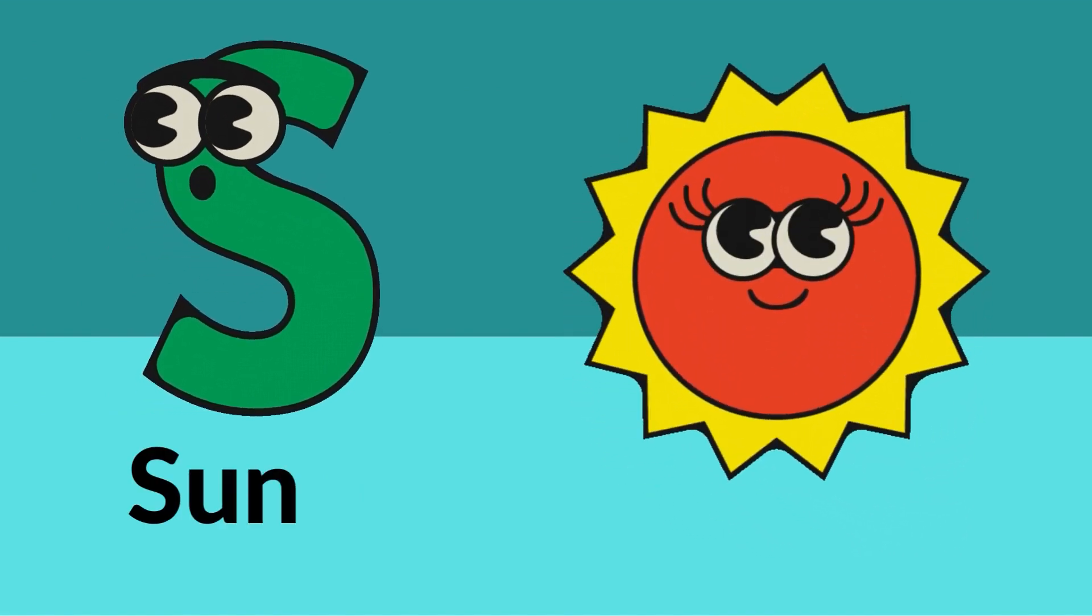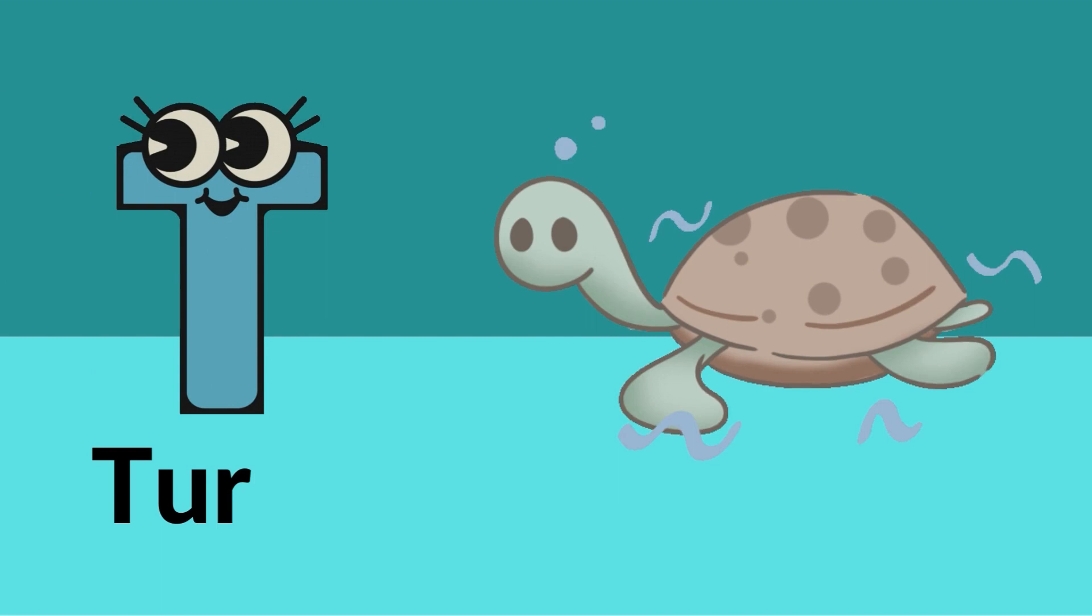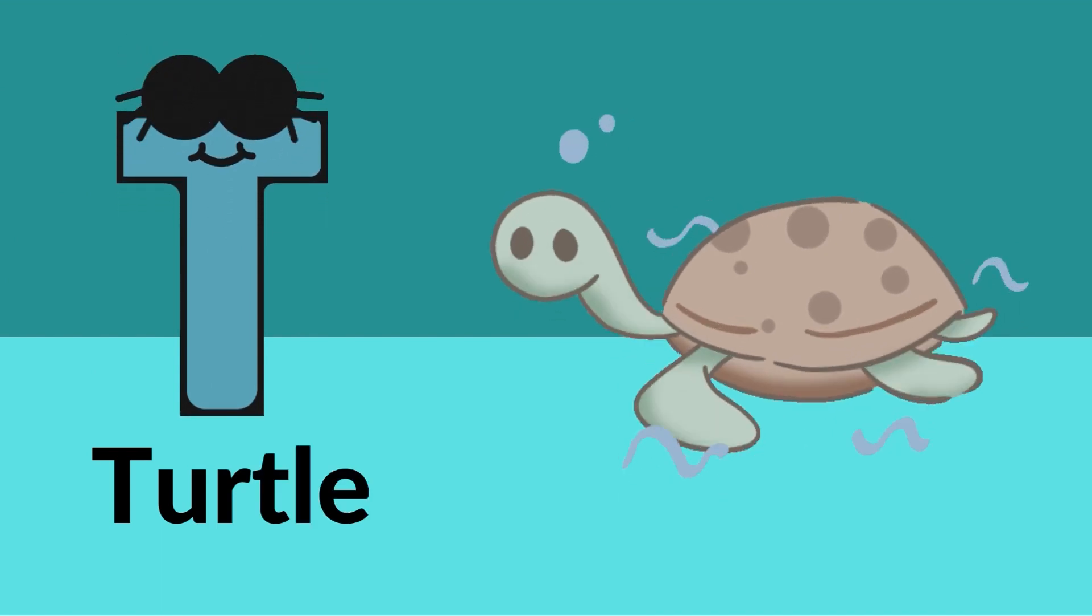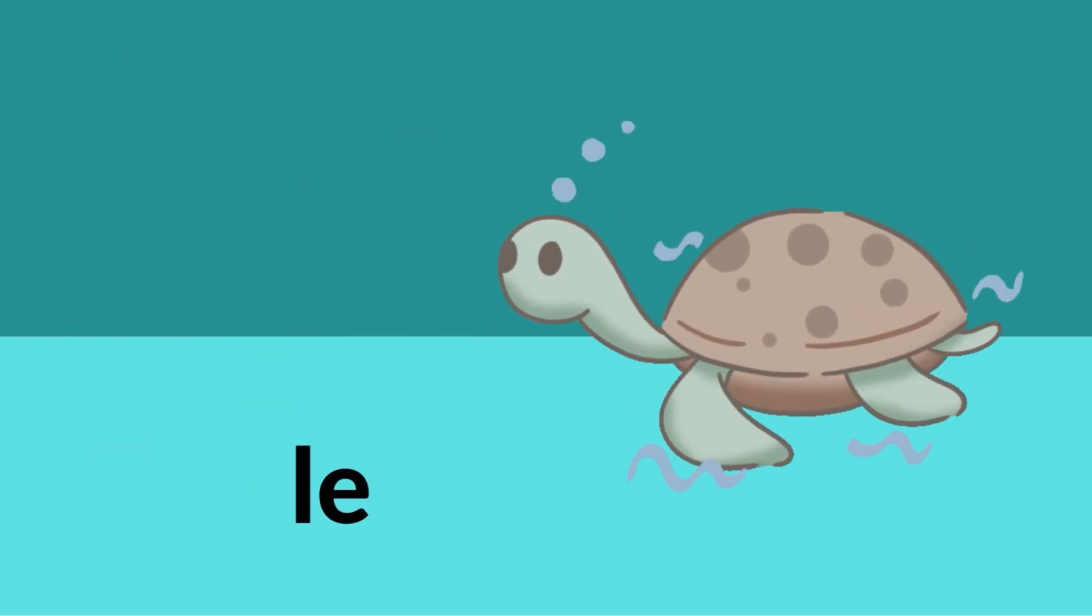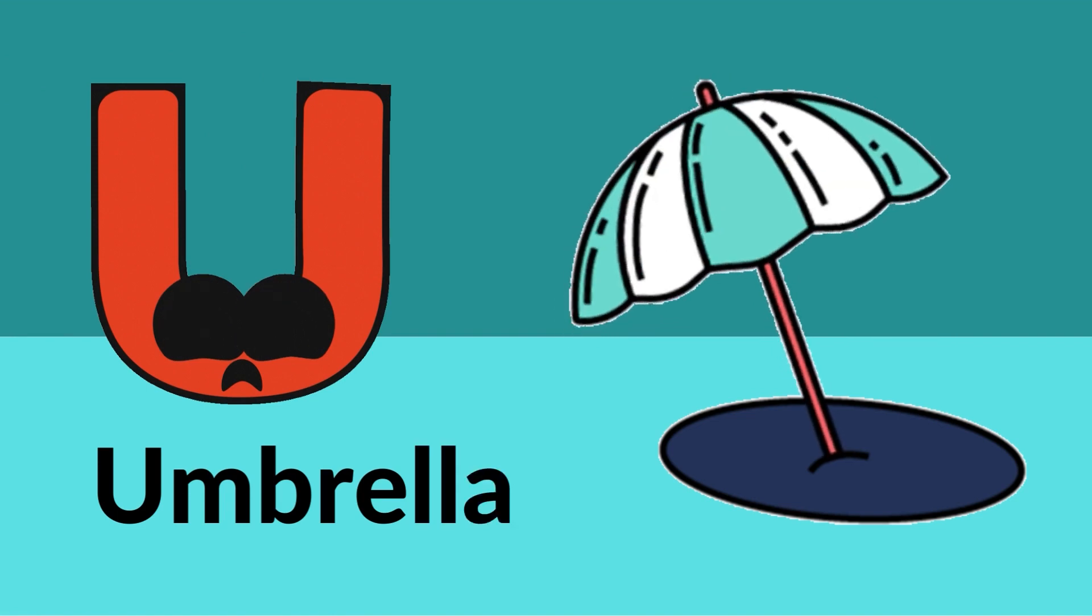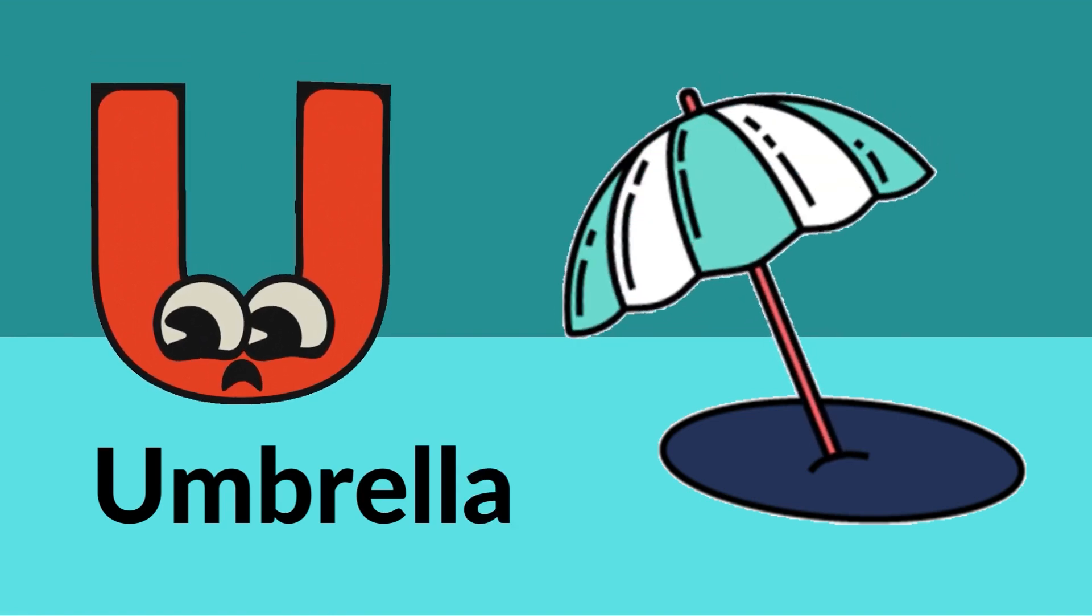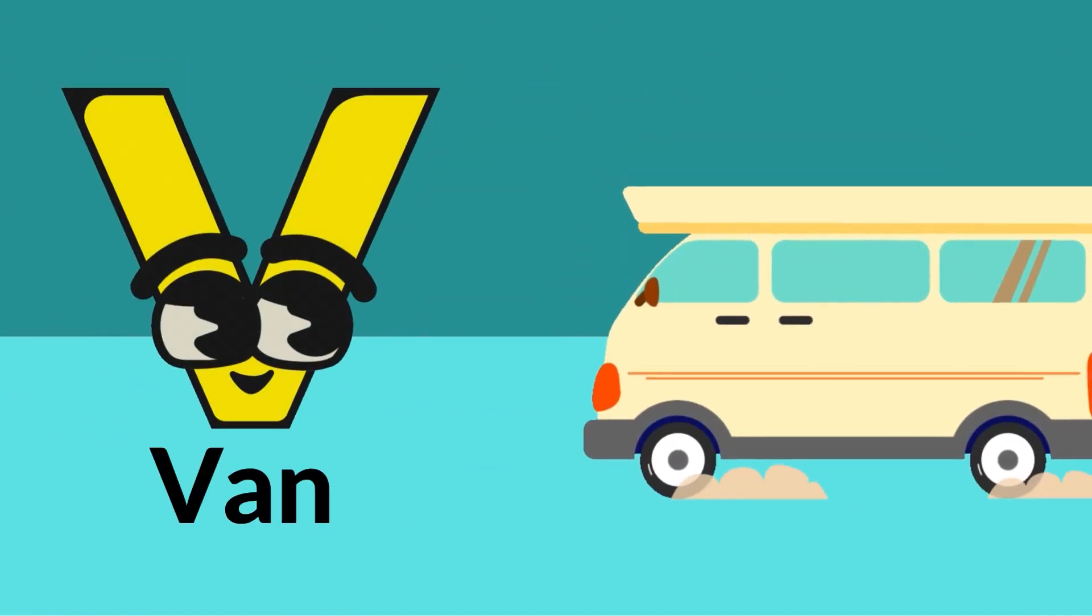T is for turtle, U is for umbrella, V is for van.